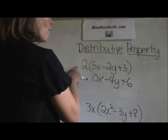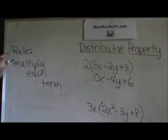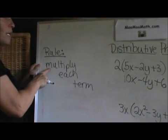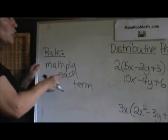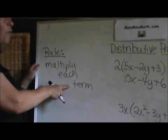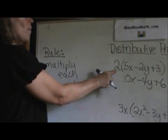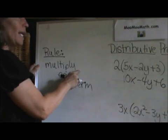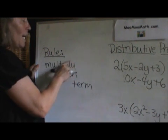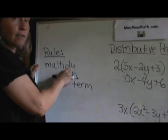Now let's go over the rules for the distributive property. The rules are very simple. We're just going to multiply each term by the lead number or the lead coefficient in front of our parentheses. So we are multiplying. That's one of the biggest mistakes I see students commit is they actually add instead of multiply.